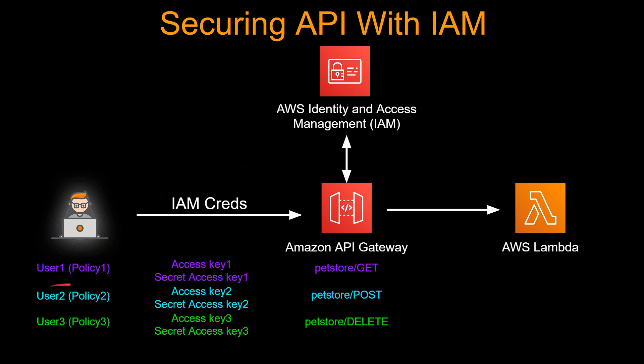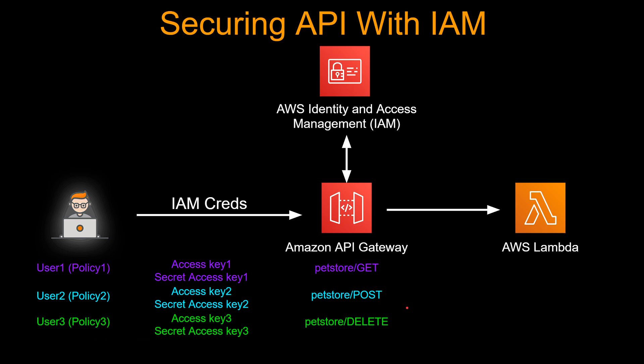So user 1 has policy 1, user 2 has policy 2, and user 3 has policy 3, each with specific permissions to call their respective methods, and you distribute the corresponding keys. However, in real-world scenarios, IAM is not used standalone. If the access key and secret access key get compromised, you are in trouble because they don't rotate — and depending on what policies are attached, a lot of harm can be done.